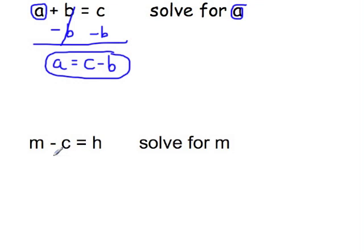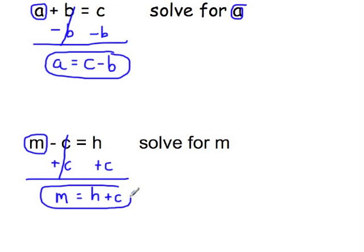Sometimes the equation involves subtracting. Now we want to solve for M. Circle the M. This says M minus C. To undo that subtracting of C, we want to add C to both sides to maintain the balance of the equation. Negative C and C cancel. We get M on the left side. On the right side, H and C are not like terms, so we are just going to write them together as H plus C. This is our literal equation solved for M.